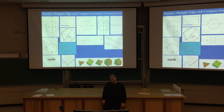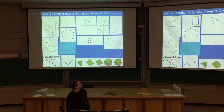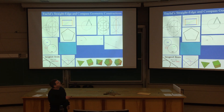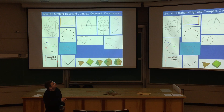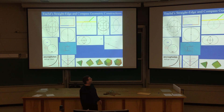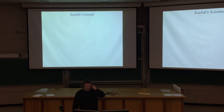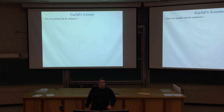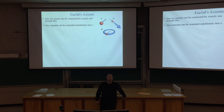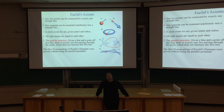Euclid is also famous for his straightedge and compass constructions — for example, one bisects a segment using compass and straightedge. You can try to figure out offline what the others are doing. Here are the Platonic solids. And here are Euclid's five axioms — from just those five, all of Euclidean geometry arises. The interesting one is the parallel postulate.